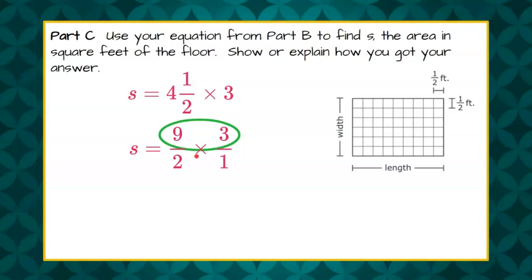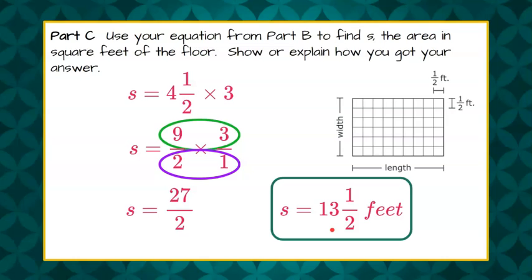So now we're going to multiply the fractions by multiplying the numerators, and then multiplying the denominators. Nine times three is 27, and two times one is two. So we have 27 halves, which can be rewritten as 13 and a half feet. Two goes into 27 thirteen times with one as a remainder. So 13 and one half is our answer for the area of our floor.